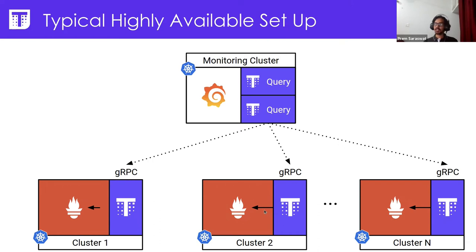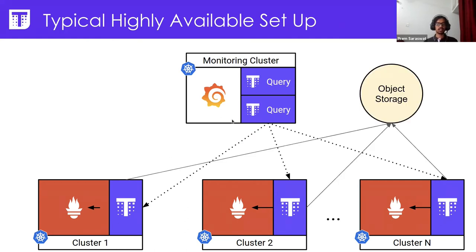All the data gets collected into Thanos query, the query gets executed on the data, and the result is returned to — for example — Grafana to show dashboards. Thanos also does deduplication on the fly, so if two Prometheus instances are scraping the same cluster, the data gets deduplicated automatically. To add unlimited retention, the Thanos sidecar supports uploading Prometheus blocks to object storage for longer retention.